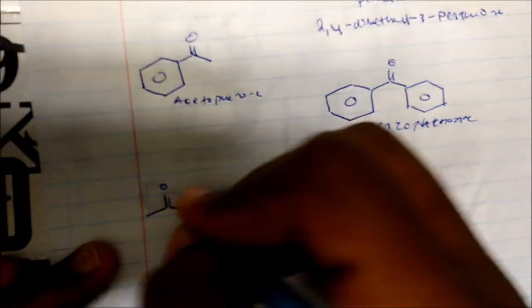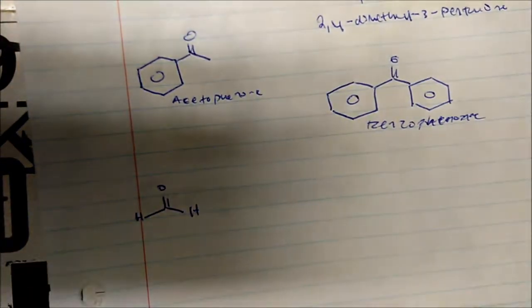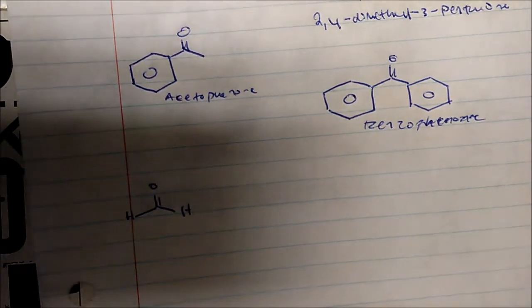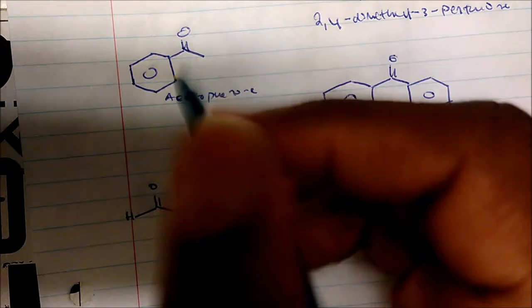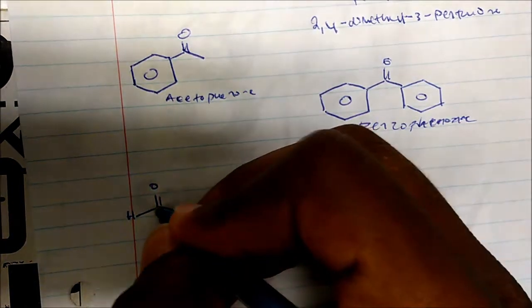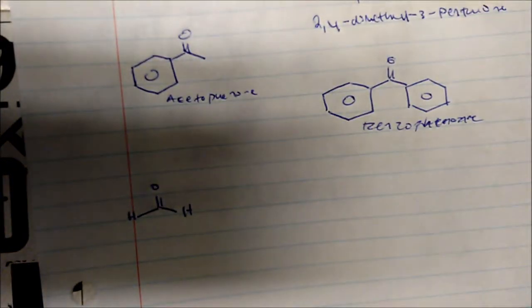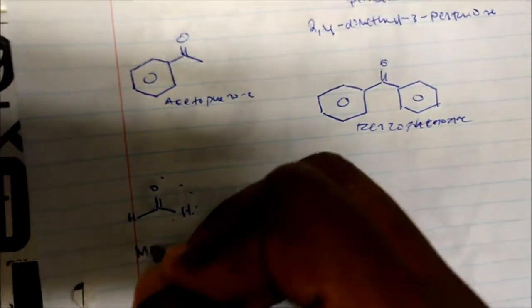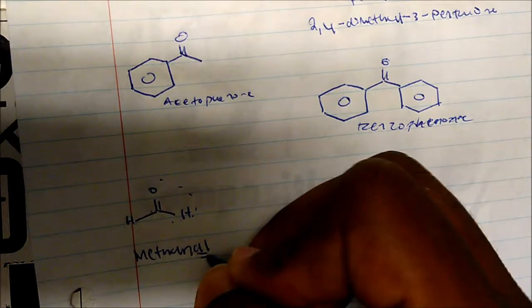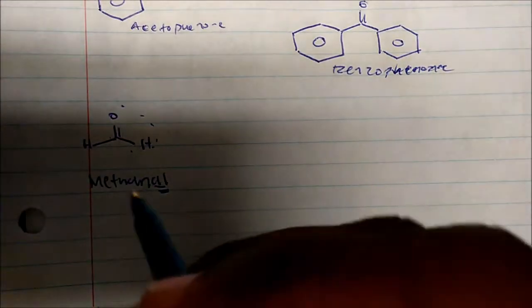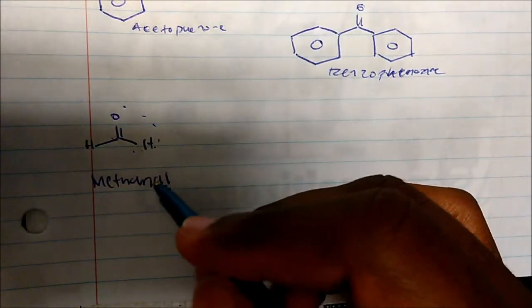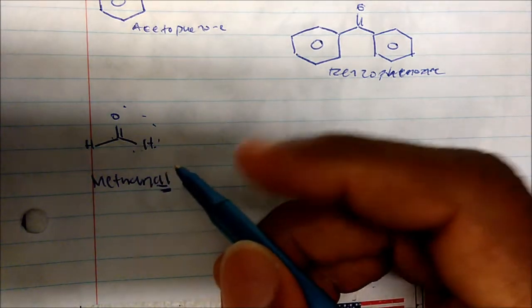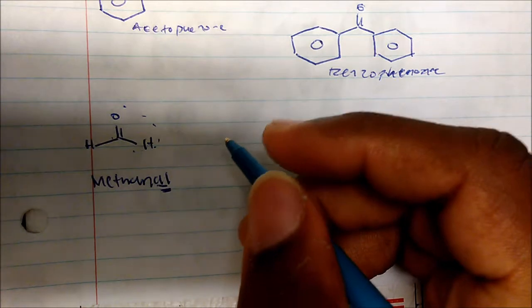Now, what about aldehydes? For this compound, what's the IUPAC name? I only have one carbon here, which would correspond to methane for an alkane. But because we're dealing with aldehydes, we replace the '-e' ending with '-al', so it's not methane — it's methanal.